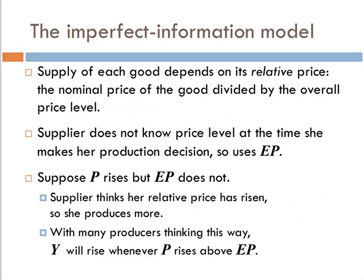Supply of each good depends on its relative price — the nominal price of a good divided by the overall price level; in other words, its real price. Because the supplier does not know the price level at the time she makes her production decisions, she uses the expected value of the price level.